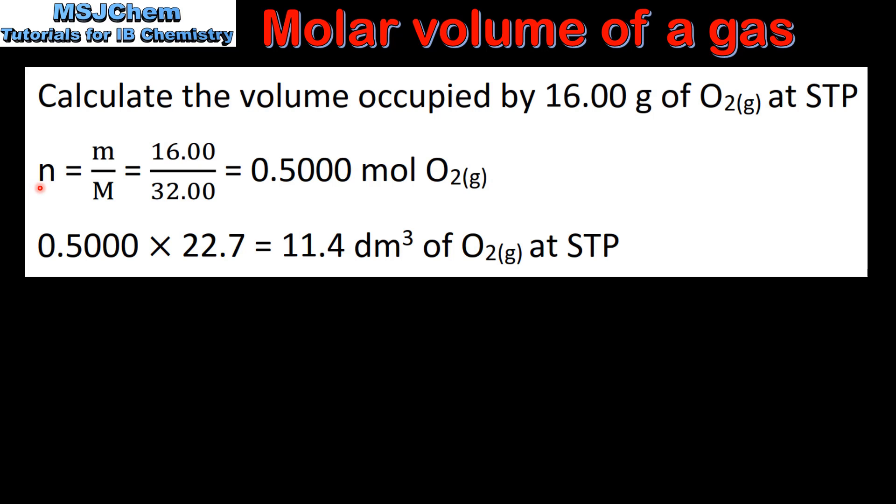So first we'll calculate the number of moles of oxygen gas using number of moles equals mass divided by molar mass. This gives us 0.5 moles of oxygen gas. Next we multiply the moles of oxygen gas by the molar volume of a gas at STP, which is 22.7, and this gives us 11.4 decimeters cubed of oxygen gas at STP.